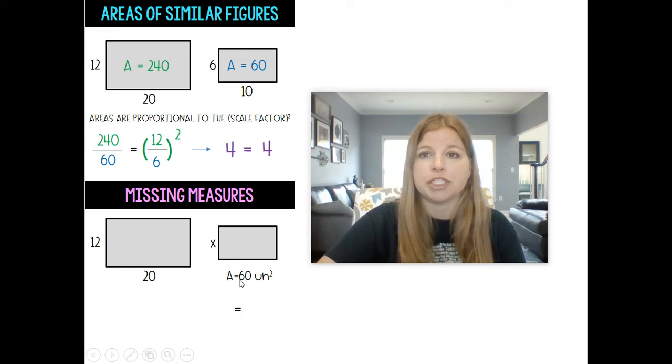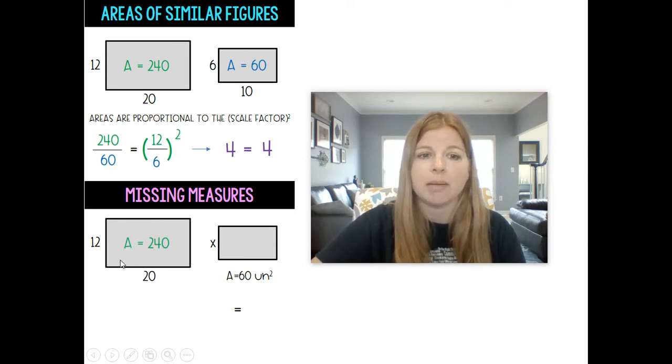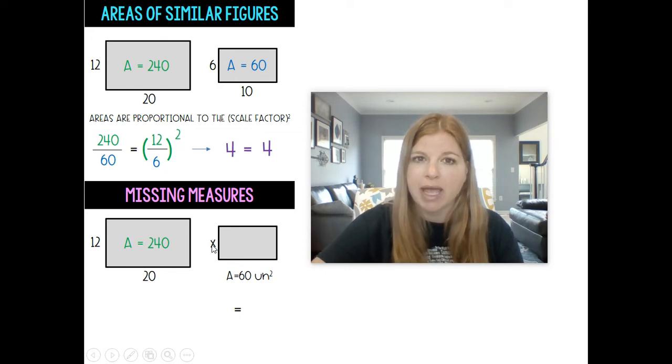Now I'm going to need that information to find some areas but to also find some missing measures. So if I gave you that information and I said that 12 times 20 is 240 and I gave you this area here of 60 and I didn't give you this side length which we know is 6, I want to show you how we could solve for that missing side.